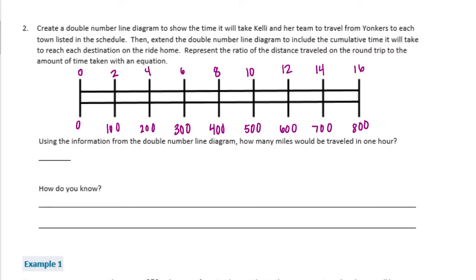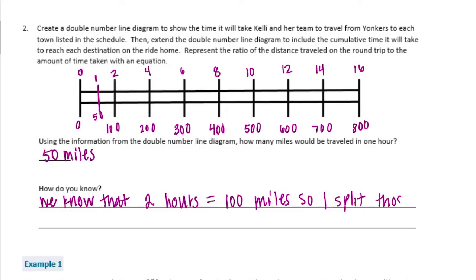And it says using the information from the double number line diagram, how many miles would be traveled in one hour? So we want to know what is one hour. The distance between 0 and 2 is 100 miles. So if we split that in half and found right in the middle, the distance halfway between 0 and 100 would be 50 miles. How do we know? So we know that two hours equals 100 miles, so I split those in half and got one hour equals 50 miles.